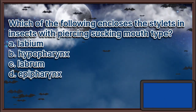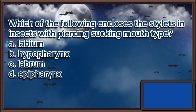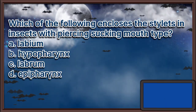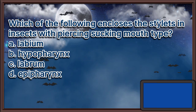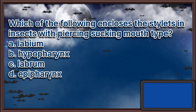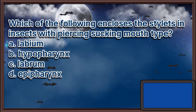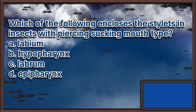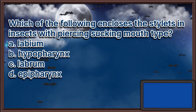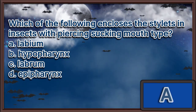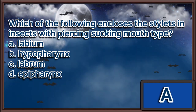Which of the following encloses the stylets in insects with a piercing-sucking mouth type? A. Labium. B. Hypopharynx. C. Labrum. D. Epipharynx. The answer is letter A.